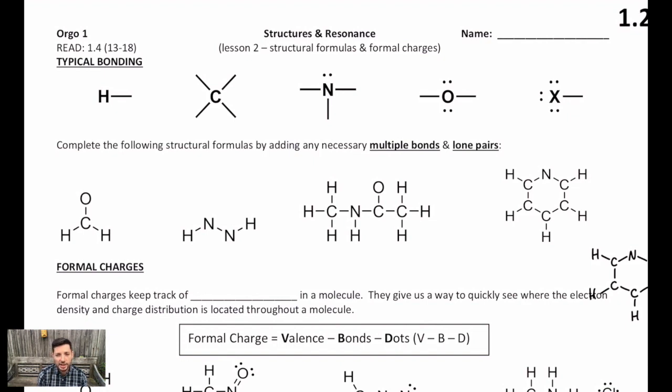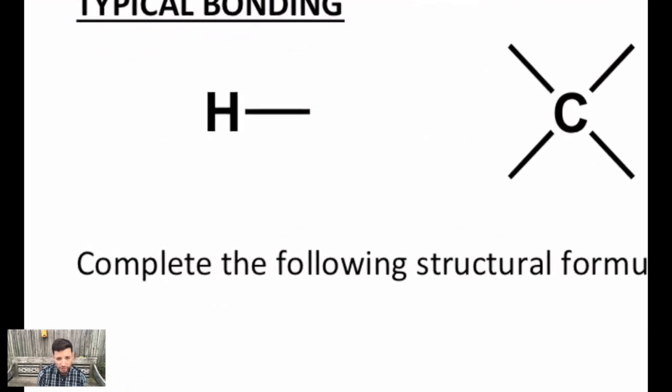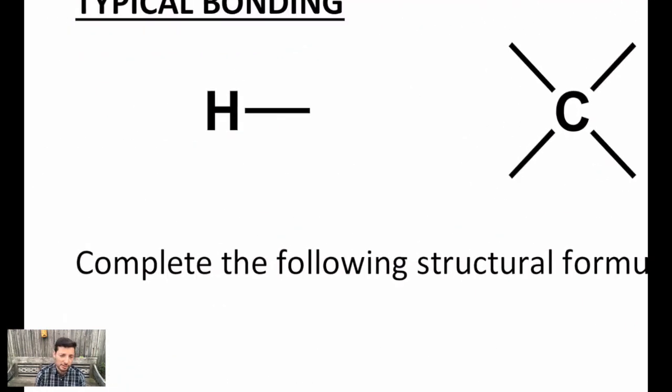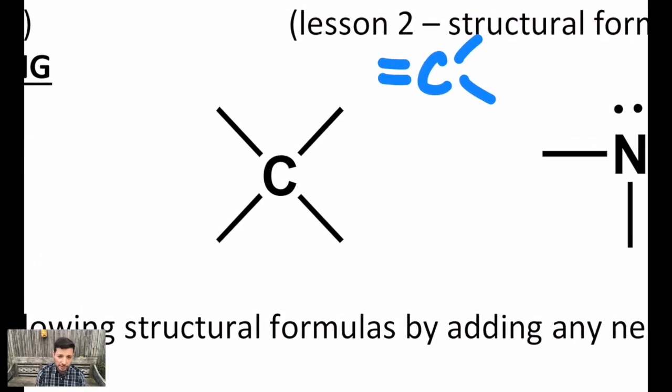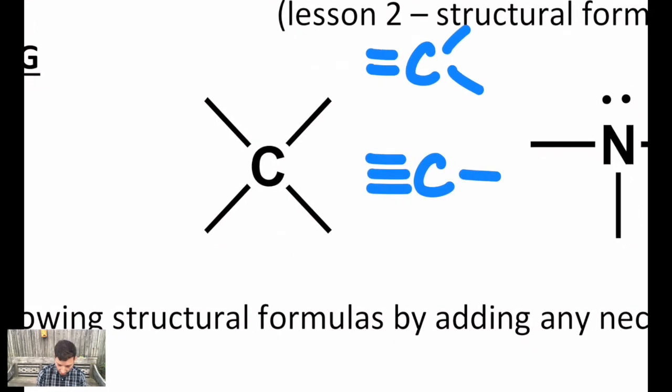I want to start off by showing how the atoms we see in organic compounds are typically bonded when they have no formal charge. Hydrogen atoms will always make one single covalent bond. Carbon will make four bonds, but having four single bonds is not the only way. You could also have a double bond and two single bonds, or a triple bond and one single bond, or two double bonds. We'll see carbon atoms that look like all four of those in the compounds we look at.